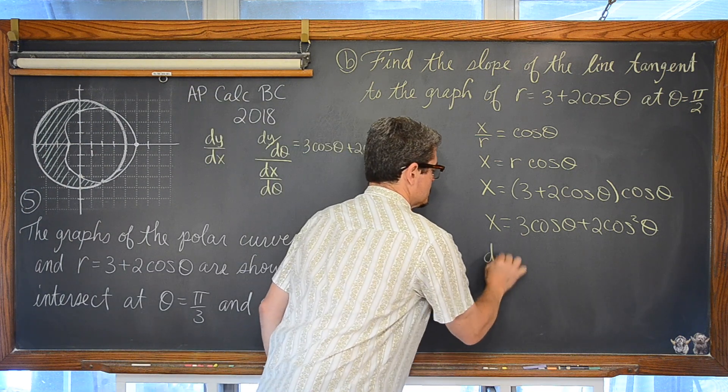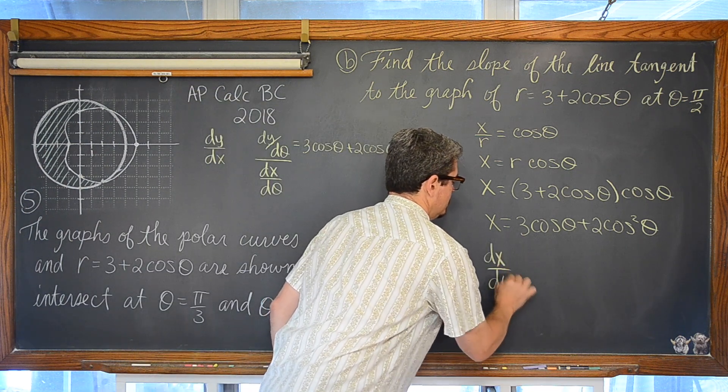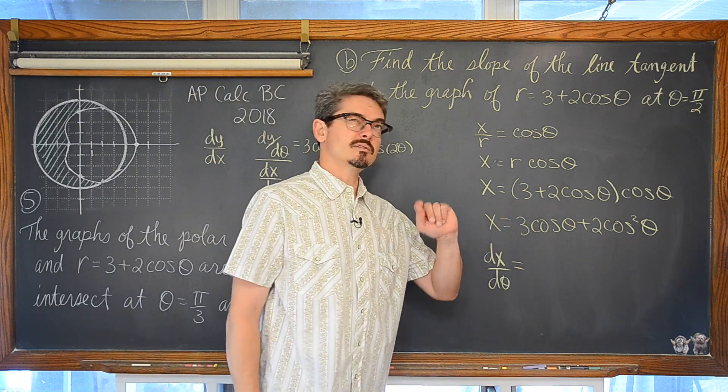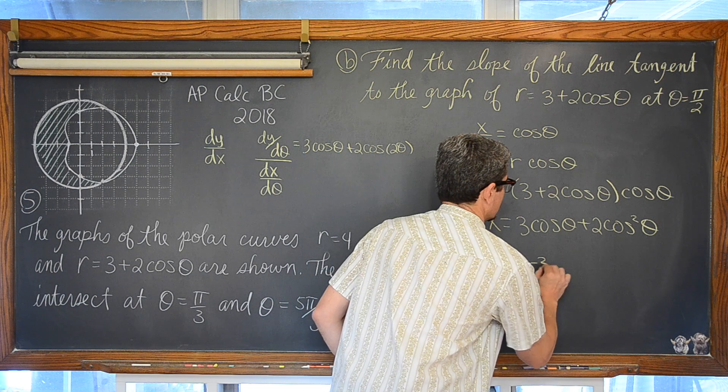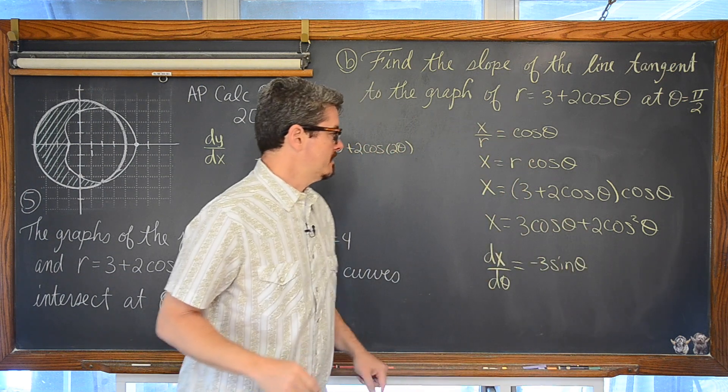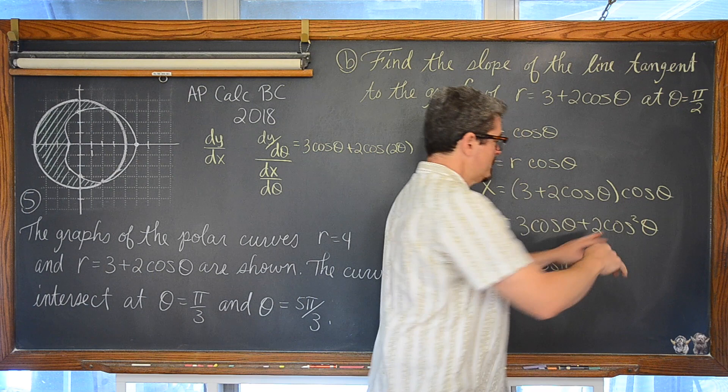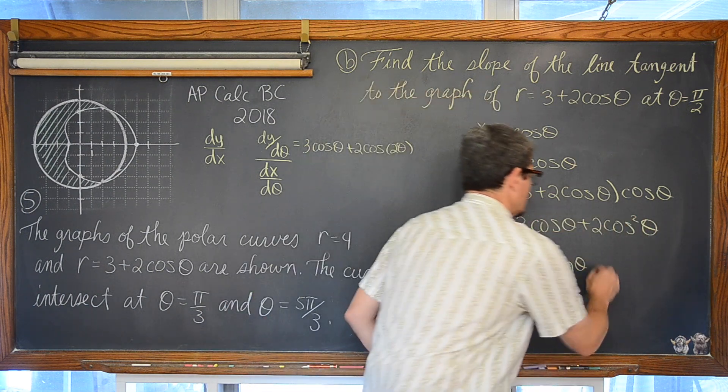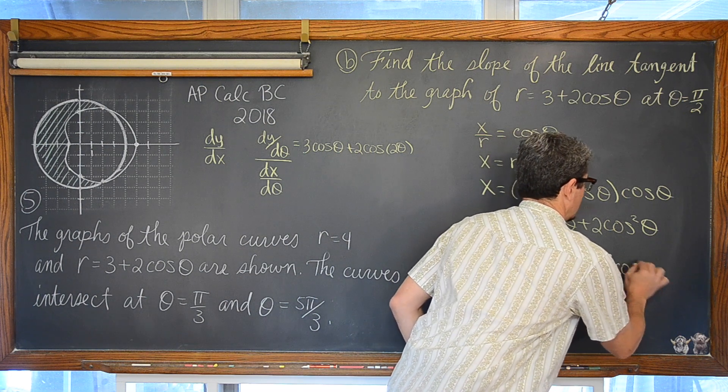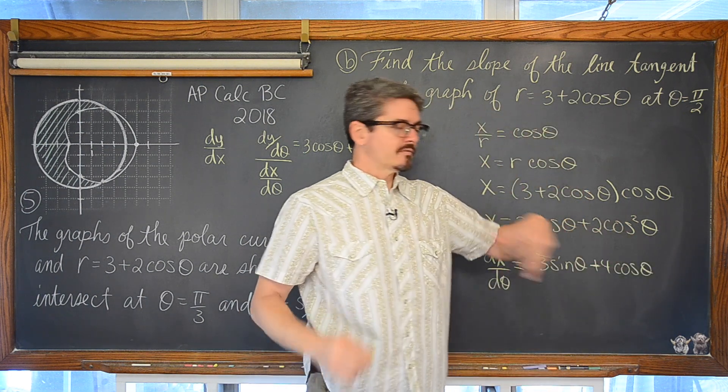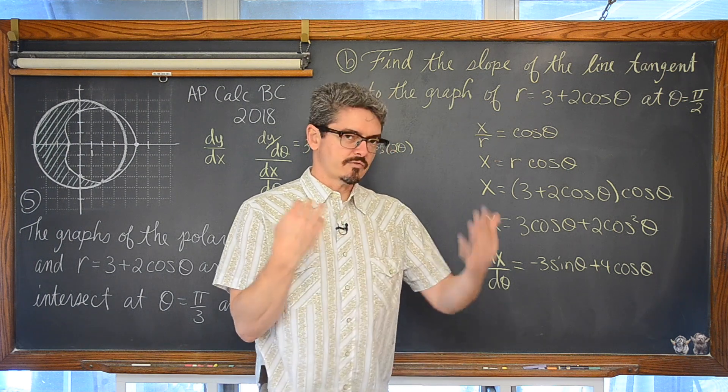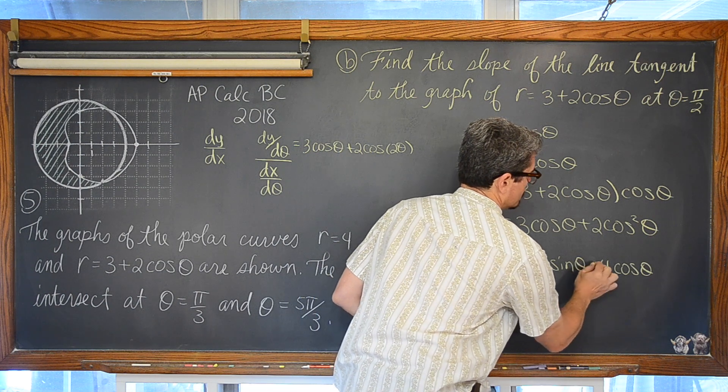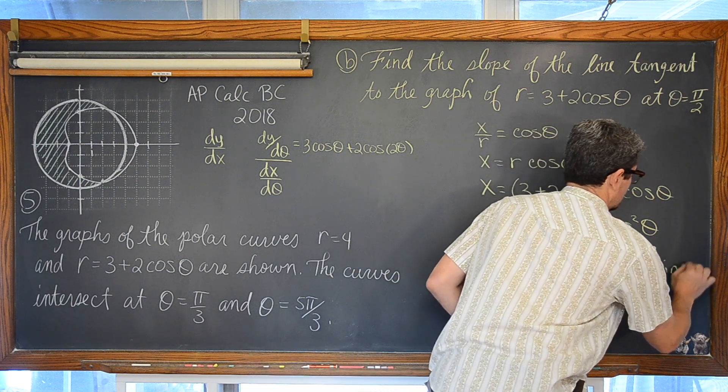Now we're going to find dx/d-theta. Take the derivative of x with respect to theta. The derivative of cosine is negative sine, so negative 3 sine of theta. And here we have the cosine of theta inside the power of 2, so we're going to bring that power down and reduce. So plus 4 cosine of theta. Now inside that power of 2 we have the cosine function, so we have to finish that chain rule. The derivative of cosine is negative sine, so we're going to change this plus 4 to minus 4 cosine of theta times negative sine theta.